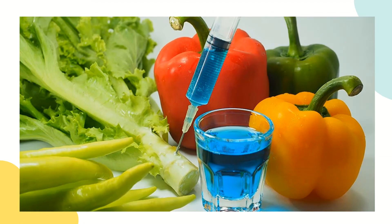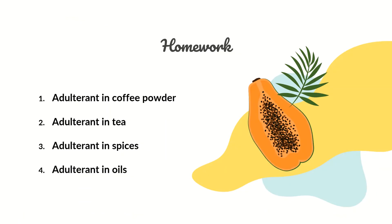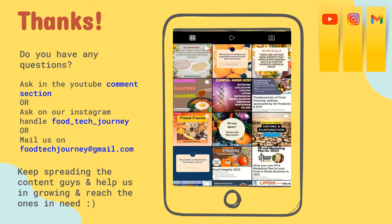Without wasting any time, I would like to give you a small homework. Find out the adulterants used in coffee powder, tea, spices, and oils — and comment your answers below. Thank you for watching. If you have any doubts, you can ask in the YouTube comment section or reach me at the Food Tech Journey handles on social media. Keep spreading the content and help us grow and reach the ones in need.